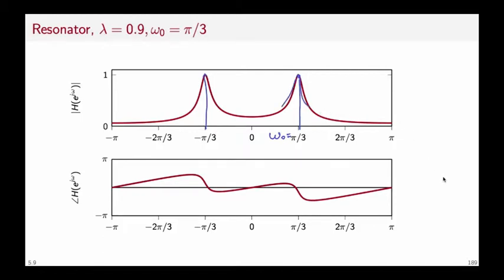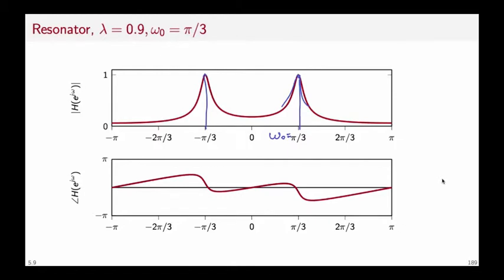We can improve the selectivity of the resonator by choosing a value for lambda that is closer to 1. And indeed if we choose lambda equal to 0.99 for the same frequency of omega zero equal to pi over 3 we obtain two peaks that are much more narrow and centered around the frequency of interest.